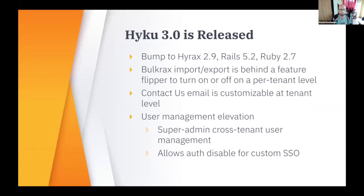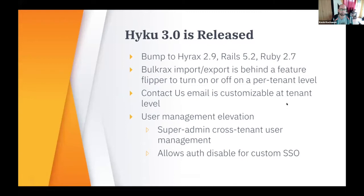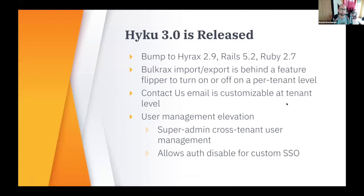The biggest news this year — recently this past month — is that Haiku 3.0 was released. That bumps everything up to Hyrax 2.9. Hyrax 3 was just released this week, so we'll be working on updating Haiku to that as well. But the 3.0 release is Hyrax 2.9 and also updates Rails and Ruby. The import/export is now behind a feature flipper so it can be used at the per-tenant level. And the contact us email workflow is customizable at the tenant level, which is the true discrete nature allowing multiple institutions to use one instance of the software.